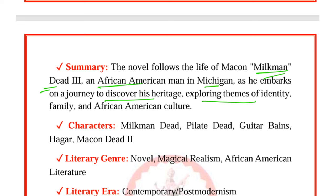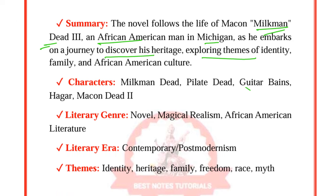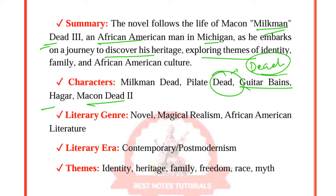Song of Solomon by Toni Morrison was published in 1977. The novel follows the life of Macon 'Milkman' Dead III, an African-American man in Michigan, as he embarks on a journey to discover his heritage, exploring themes of identity, family, and African-American culture. Characters include Milkman Dead, Pilate Dead, Guitar Bains, Hagar, and Macon Dead II.